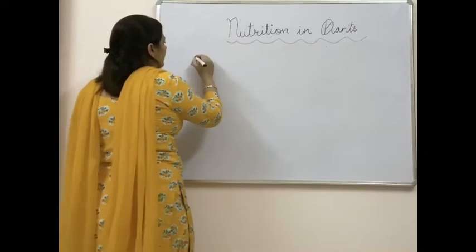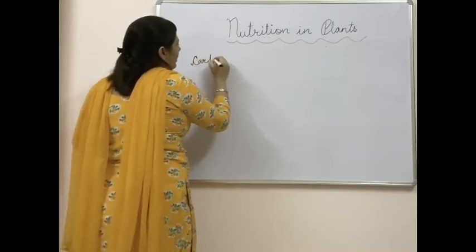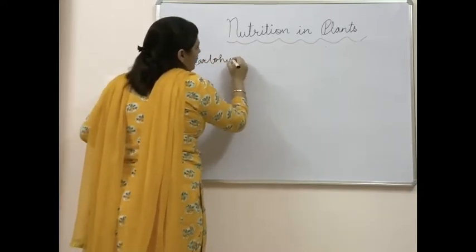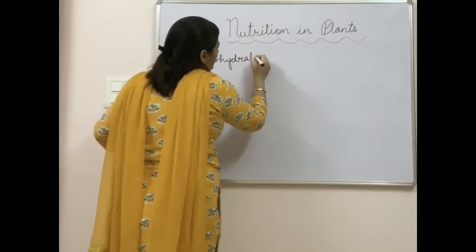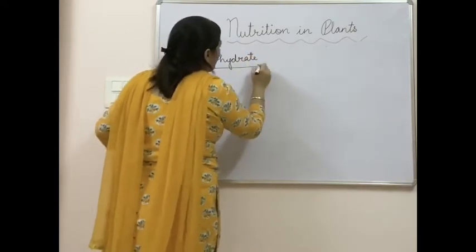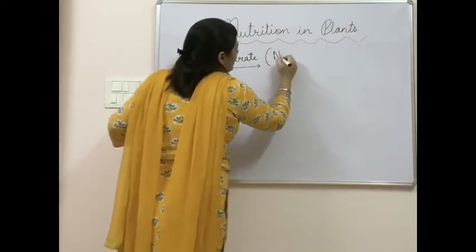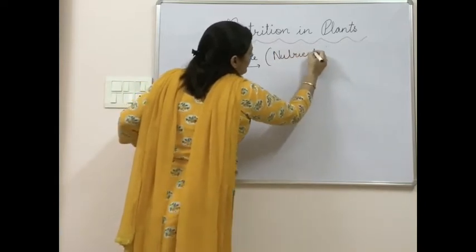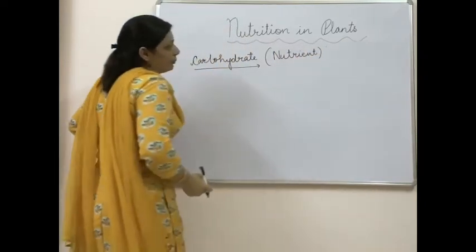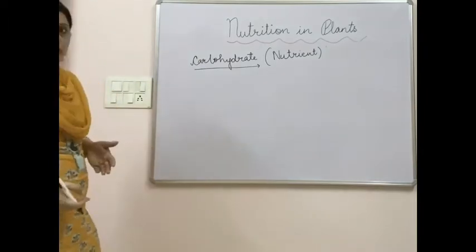Photosynthesis helps in the synthesis of carbohydrates. Carbohydrate is one important component of food, one of the important nutrients required by plants. But what about other components? There are other nutrients also which are required by plants.